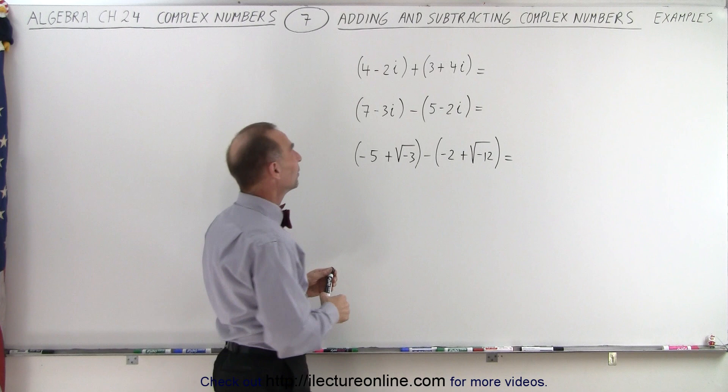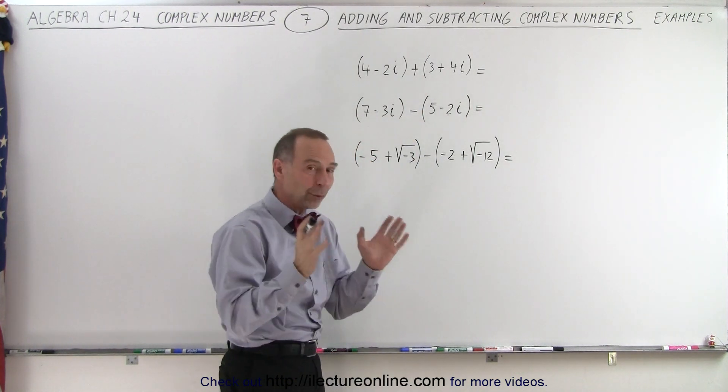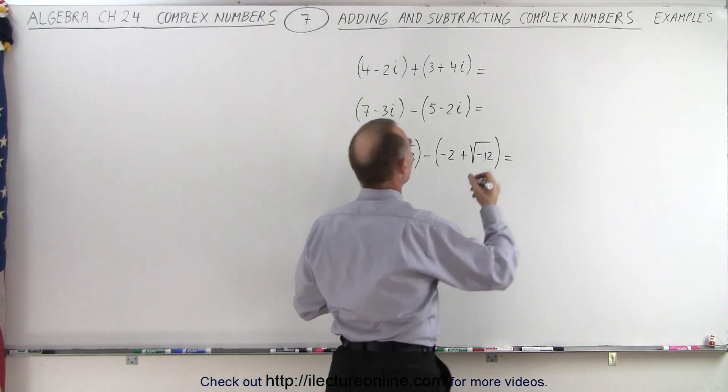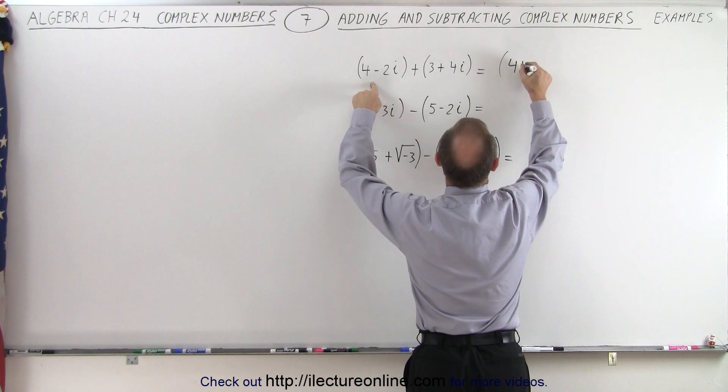All right, our first one, we have 4 minus 2i plus 3 plus 4i. So we have to add the real parts and add the imaginary parts together. So that becomes, for the real part, we have 4 plus 3,